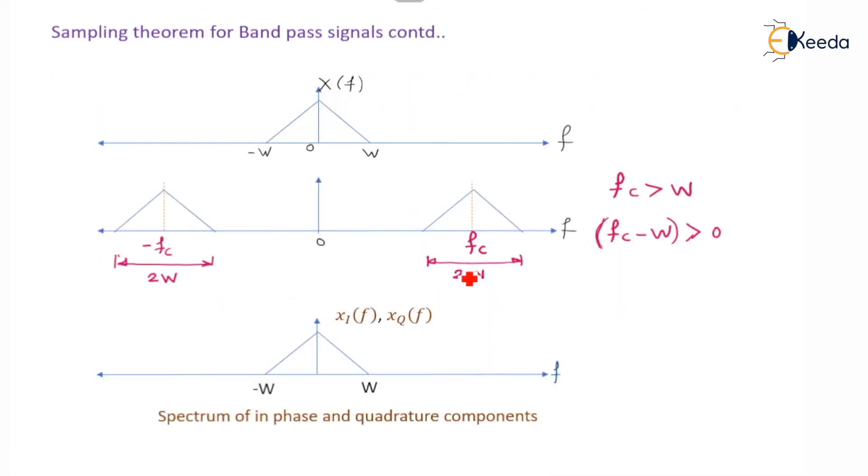Now let us see the operation. For the sampling theorem for bandpass signals, the spectrum of the signal is spread from minus W to W, so the overall bandwidth is 2W. Here fc is greater than W, hence we can write fc minus W greater than 0.